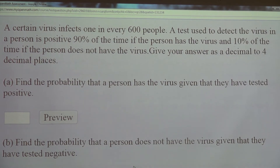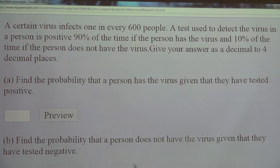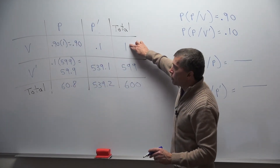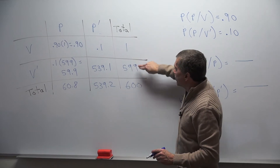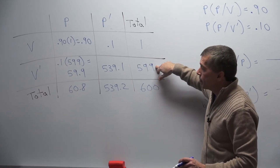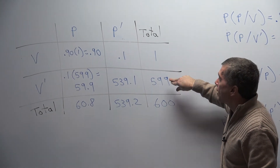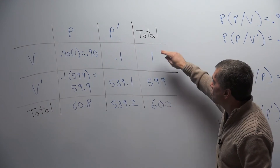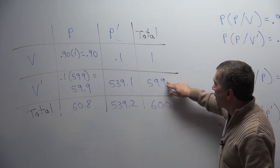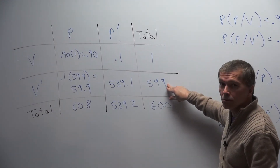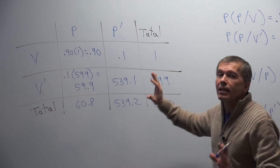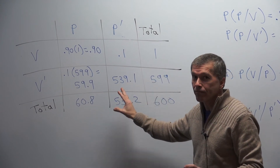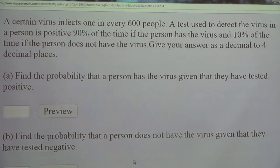On this problem, it says a certain virus infects one in every 600 people. Here's the one person that has the virus, and here's the 599 people that don't have the virus — a total of 600 people. So it's one in 600, meaning 599 don't have the virus. This is one of those problems where if you don't make the table, you're not going to get it — so make the table.